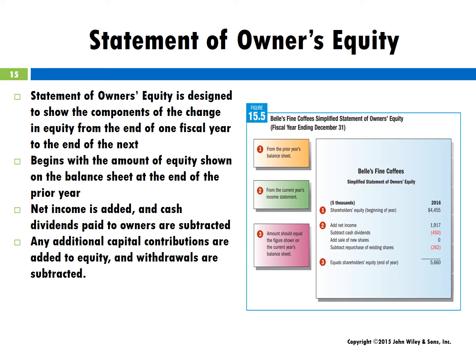The statement of owner's equity is designed to show the components of the change in equity from the end of one fiscal year to the end of the next. It begins with the amount of equity shown on the balance sheet at the end of the prior year. Net income is added, cash dividends paid to owners are subtracted, and any additional capital contributions are added while withdrawals are subtracted. The statement of owner's equity uses information from both the balance sheet and the income statement.